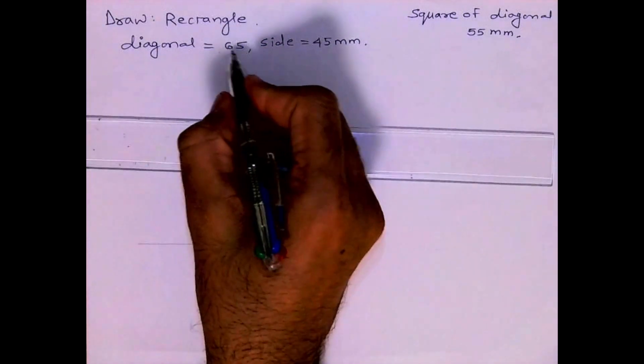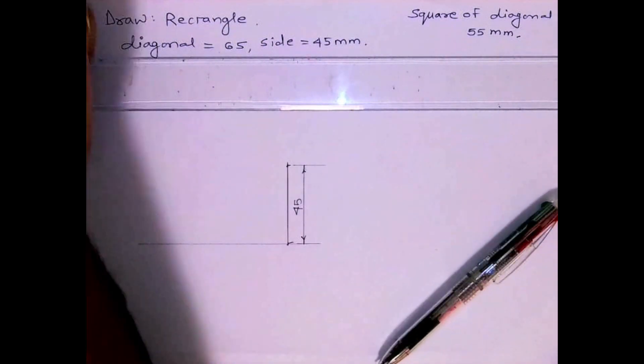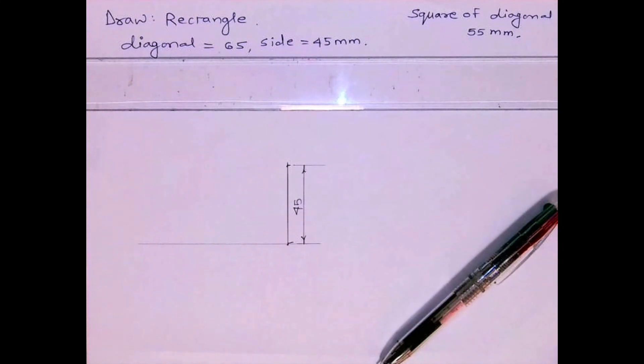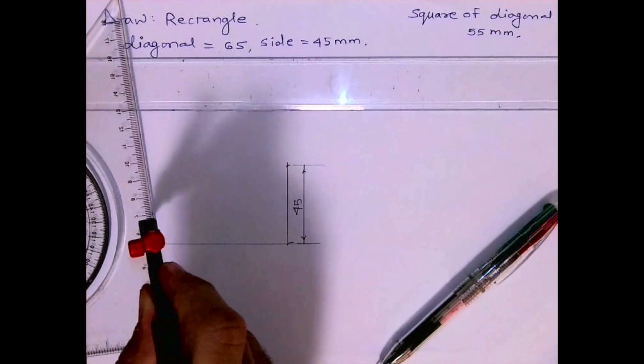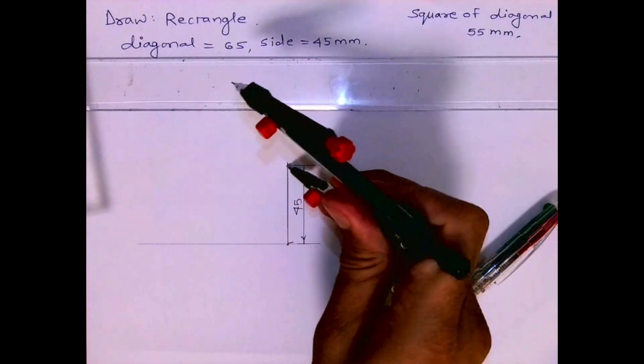Let's say 45, and now diagonal is 65. So take 65 and from here you cut.